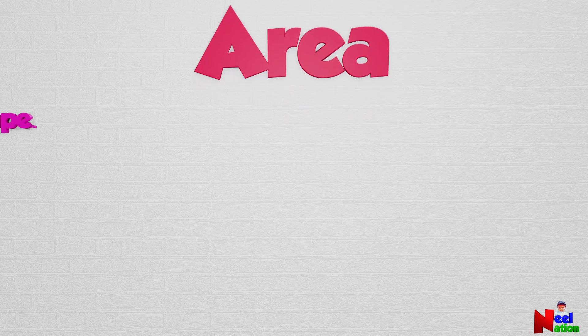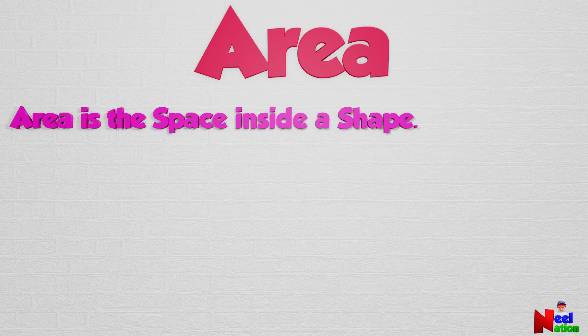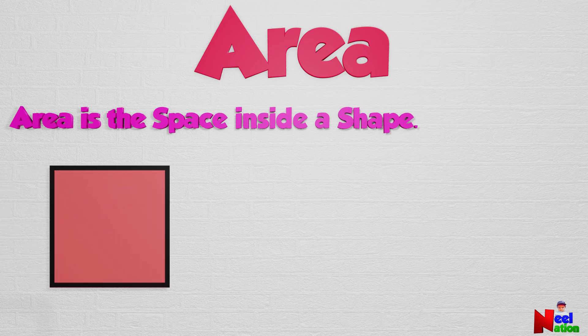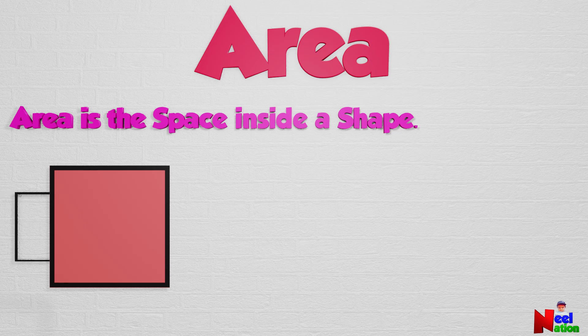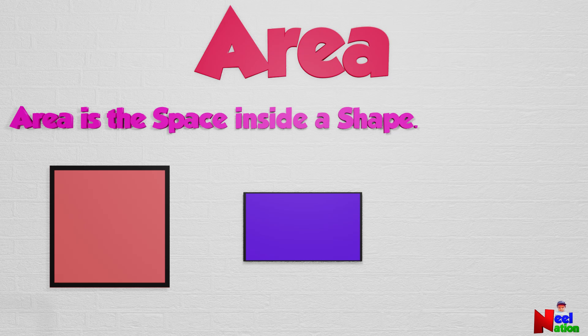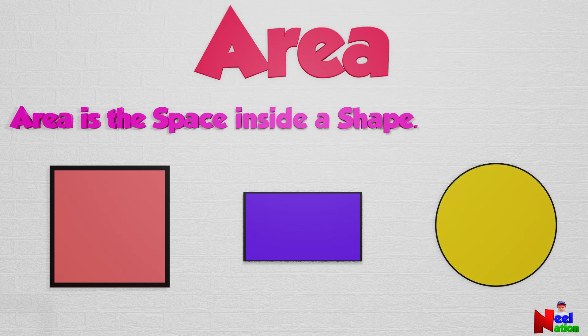Area can be defined as the space inside a shape. The area of this square is the space inside this shape and the area of this rectangle is the space it covers. The area of this circle is the space inside the circle.